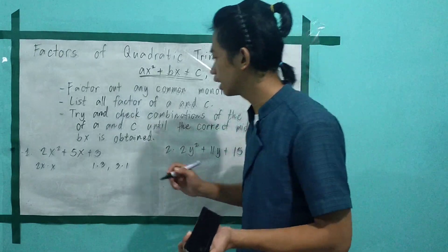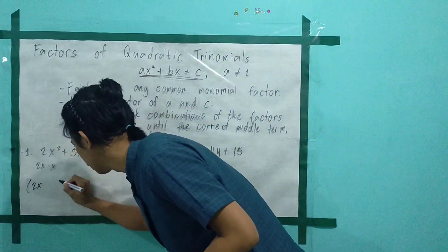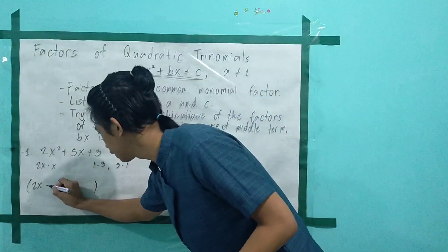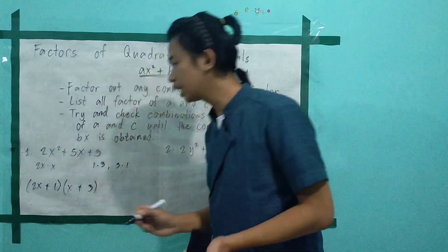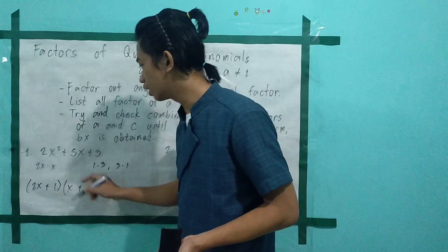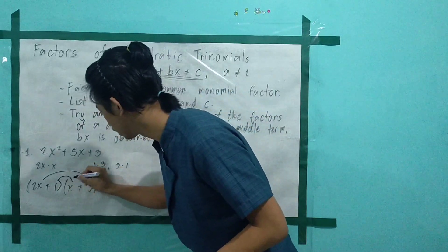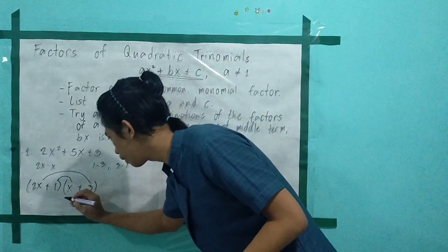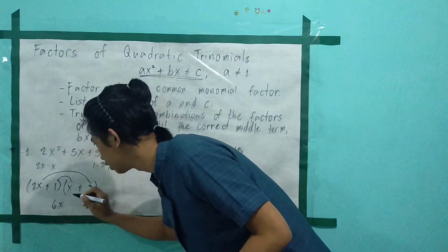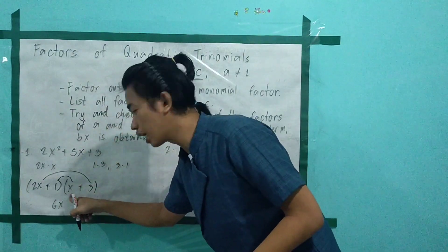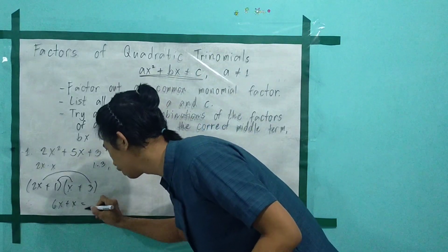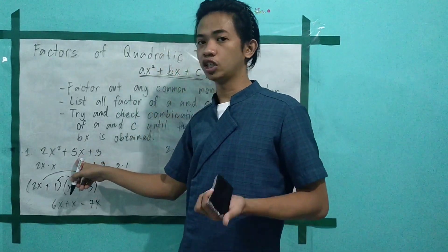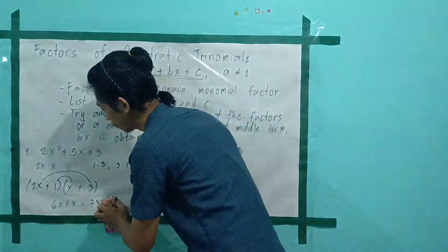Let's try the trial and error method. We have (2x + 1)(x + 3). Multiply the outer term and the inner term — their sum must equal the middle term. So 2x multiplied by 3 gives 6x, and 1 multiplied by x gives x. The sum is 6x plus x, which is 7x. Is that the same as our middle term? No — so this is not the correct factoring.